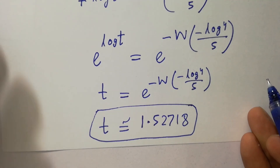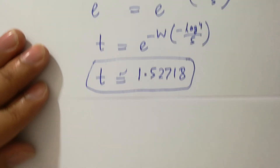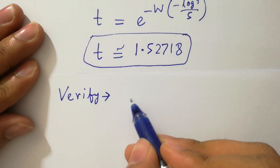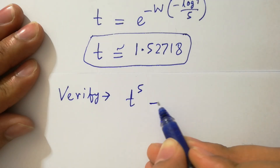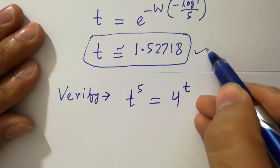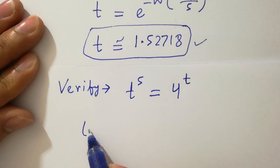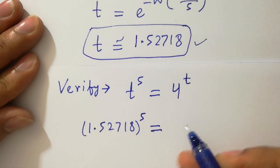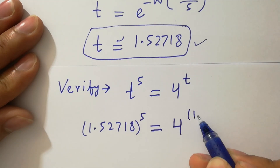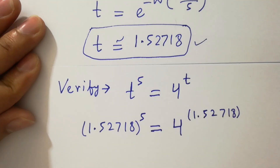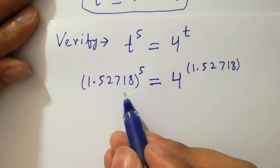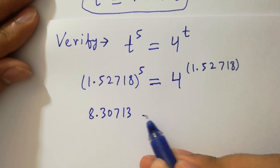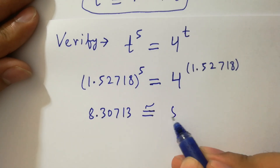Now let's verify. We have the equation t to the power 5 equals 4 to the power t. Putting t equals 1.52718: 1.52718 to the power 5 gives approximately 8.30713, and 4 to the power 1.52718 also gives approximately 8.30713. Both sides match, confirming our answer.